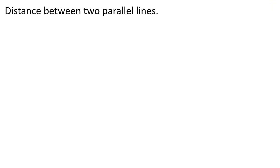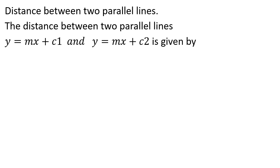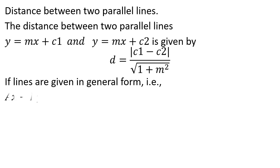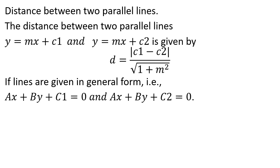The distance between two parallel lines y = mx + c1 and y = mx + c2 is given by |c1 - c2| divided by the square root of (1 + m²). In general equation form, for ax + by + c1 = 0 and ax + by + c2 = 0, the distance is |c1 - c2| divided by the square root of (a² + b²).